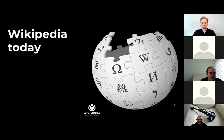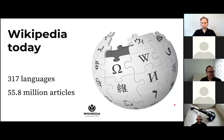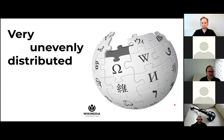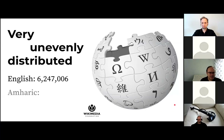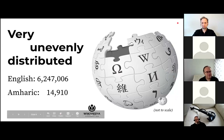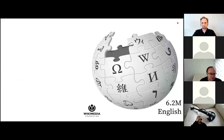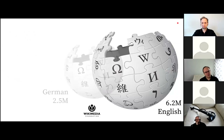Wikipedia today is available in more than 300 languages and has more than 55 million articles. But this sounds great on paper — the distribution is very uneven. On one side you have languages like English with more than six million articles, and on the other side a language like Amharic, which has more than 20 million native speakers but fewer than 15,000 articles.